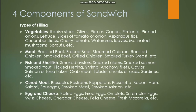Types of fillings we can use include vegetables, meats, fish and shellfish, cured meats, eggs, and cheese. For vegetables, examples include radish slices, olives, pickles, capers, pimento, pickled onions, lettuce, sliced tomato or onion, fresh or sautéed or roasted tomato and onion, asparagus tips, cucumber slices, cherry tomatoes, watercress leaves, marinated mushrooms, and sprouts.